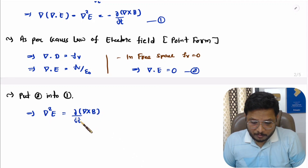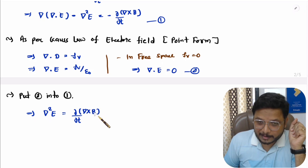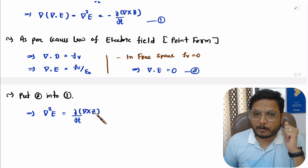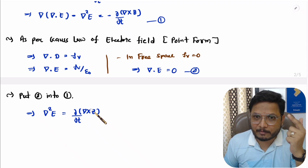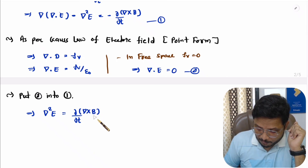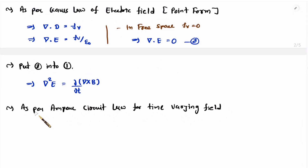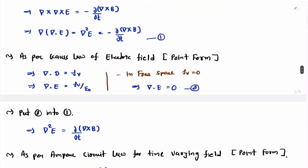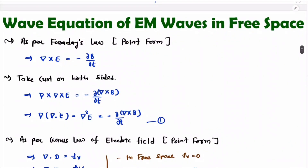This is a somewhat simplified equation. Now we will convert the magnetic field term into terms of electric field using Ampere's circuit law, which I have explained in my earlier videos. As per Ampere's circuit law for time-varying fields in point form, we have del cross H equals JC, the conduction current density, plus del D by del T. For free space, conduction current density JC is zero.